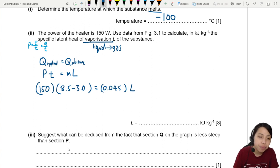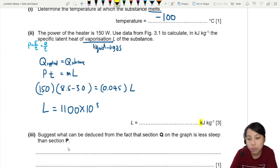5.5 minutes. So our L here should be 1100 times 10 to the 3. Be careful, here I already got kilojoules in the answer line. So you just don't need to put the times 10 to the 3. Just write 1100. Three marks.